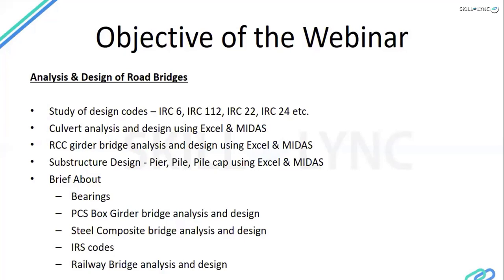Up to point four, we will be dealing mainly with RCC, which is reinforced cement concrete bridges. Then later on we'll look into pre-stressed types of bridges. Why we go for RCC versus PSC type bridges — I'll let you know in the coming slides. Since this is also a vehicular bridge context, we have steel bridges as well, used for railway crossings or long-span bridges. Then we'll jump into the IRS part, which is the railway part. This is the objective of our webinar.